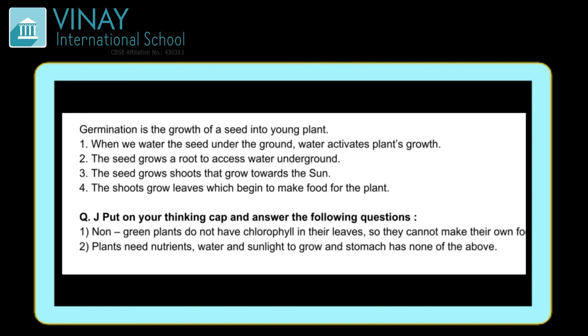Third, the seed grows a shoot that grows towards the sun. Seed jo hai woh root ke baad shoot grow karta hai jo sun ki taraf, yani ki upar ki taraf grow hota hai. Fourth, the shoot grows leaves which begin to make food for the plant. So this is the process of germination.